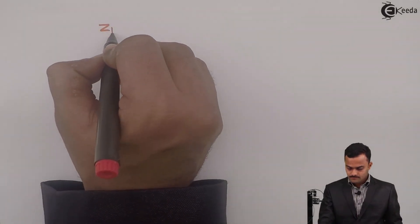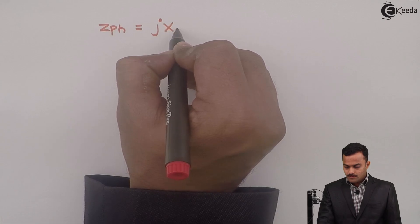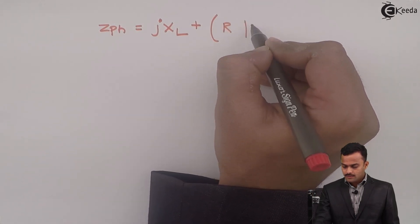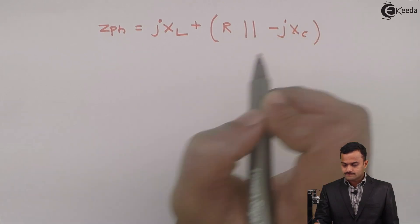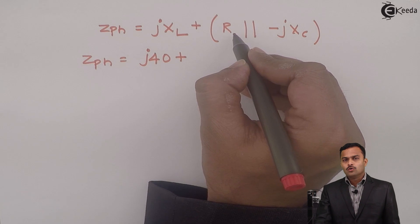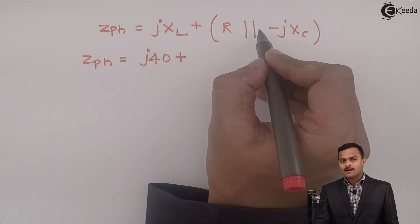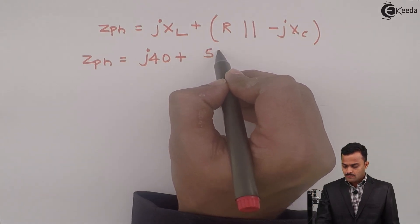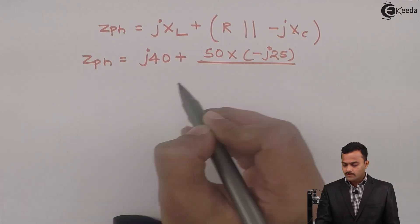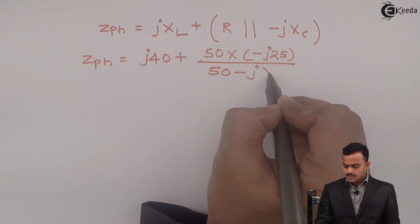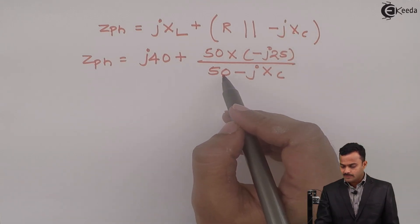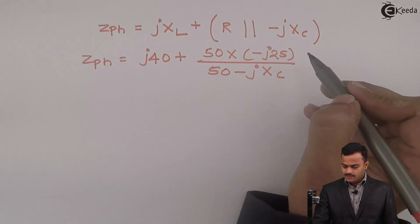Now how to get ZPH? ZPH will be series combination of inductive reactance and parallel combination of R and capacitive reactance. So ZPH equal to J 40 plus we know how to get that equivalent of two parallel impedances, so it's R multiplied by minus J XC divided by R plus minus J XC. If I consider it's having minus J operator with it, it becomes 50 minus J XC where XC is 25.